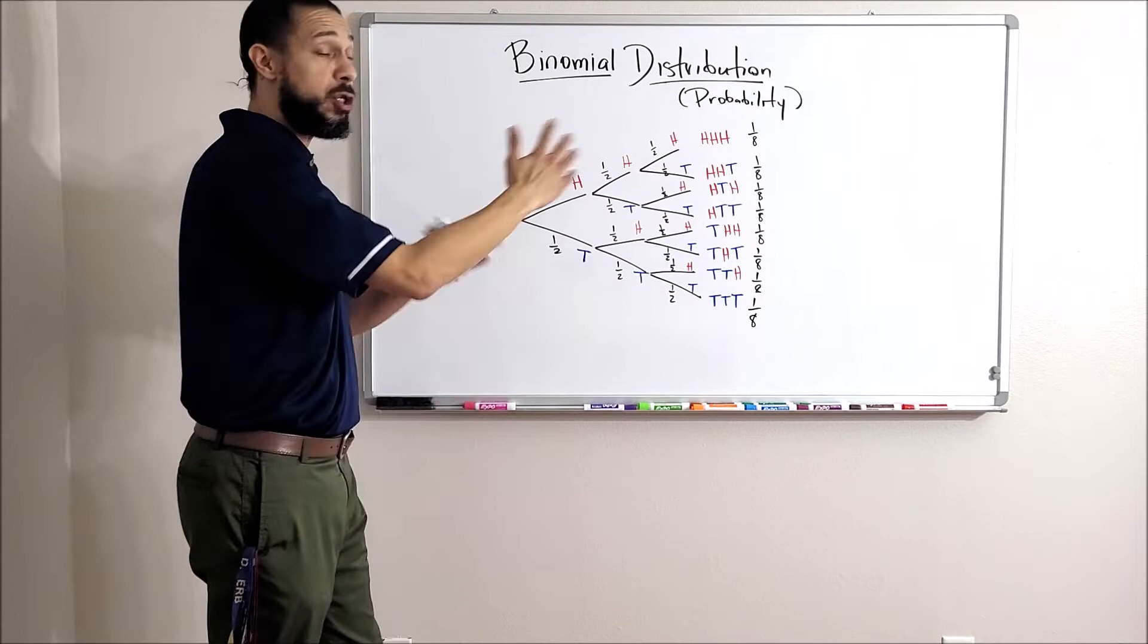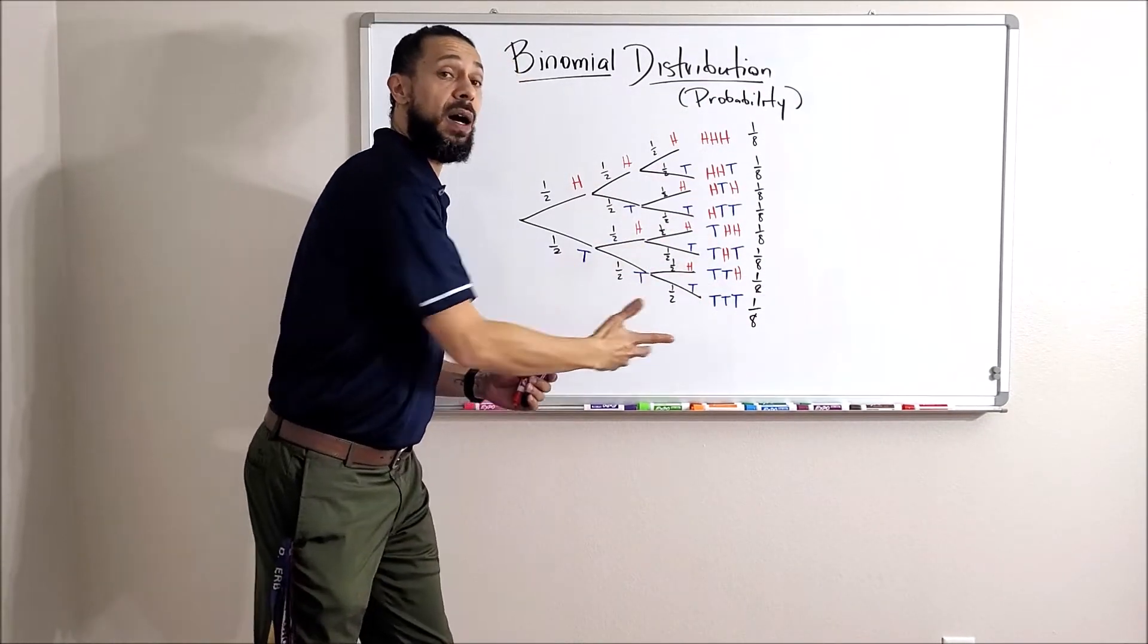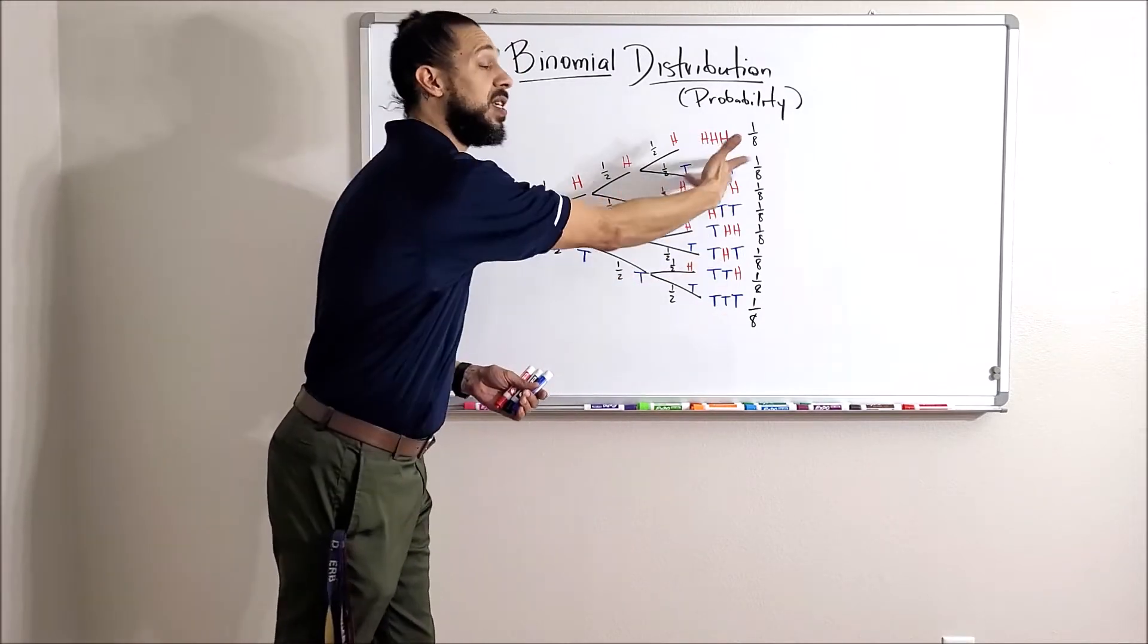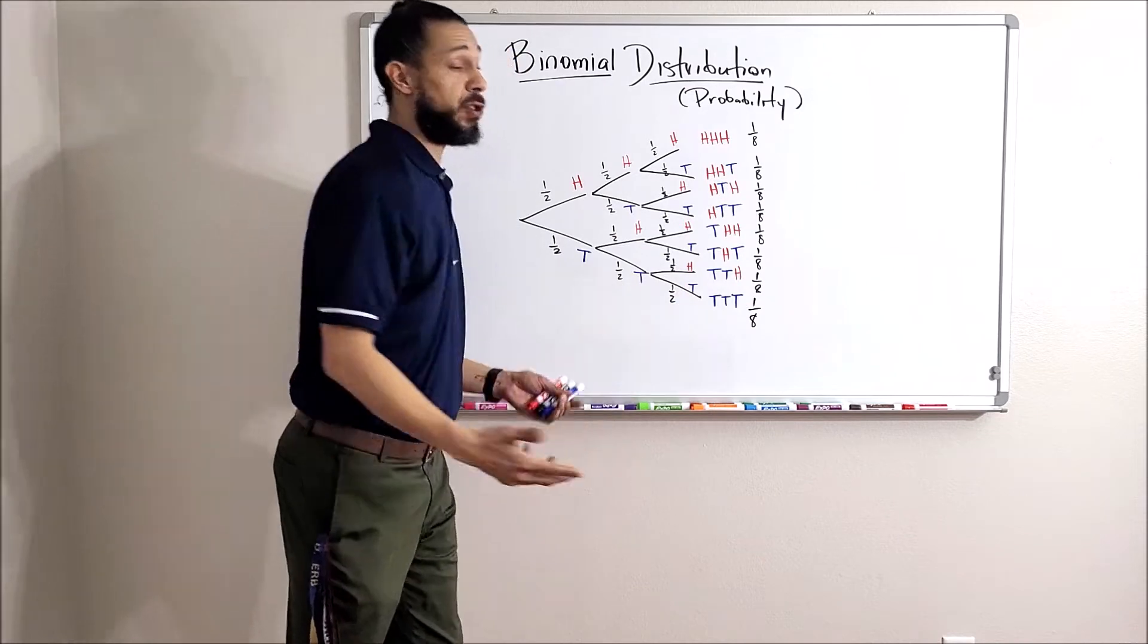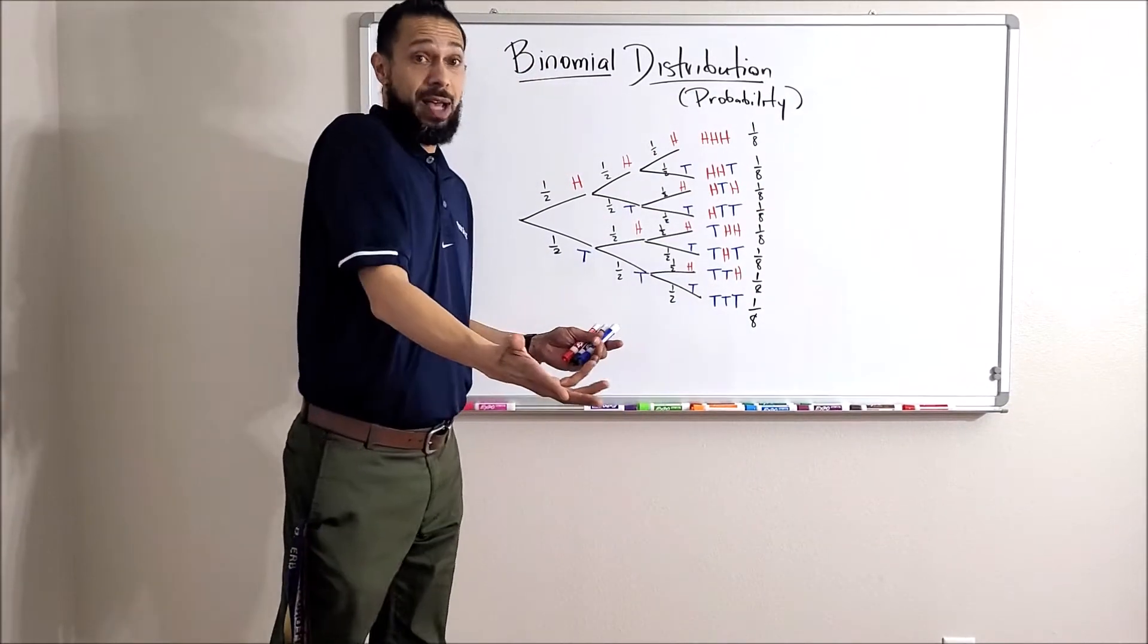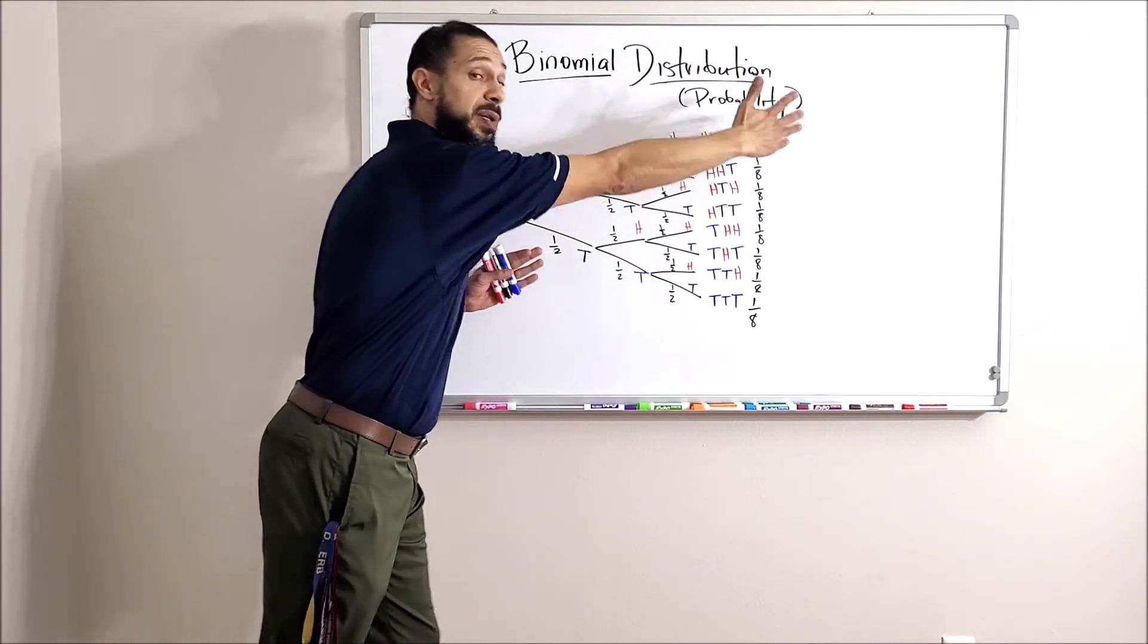These are all the ways that that could pan out: three heads, two heads and a tail, heads tail heads. We can do some pretty simple math to figure out how many of these outcomes have two tails or three heads.